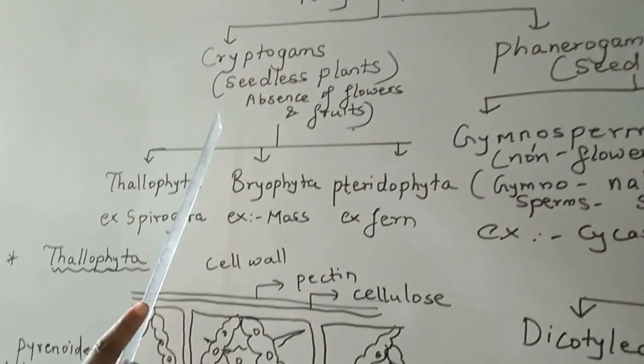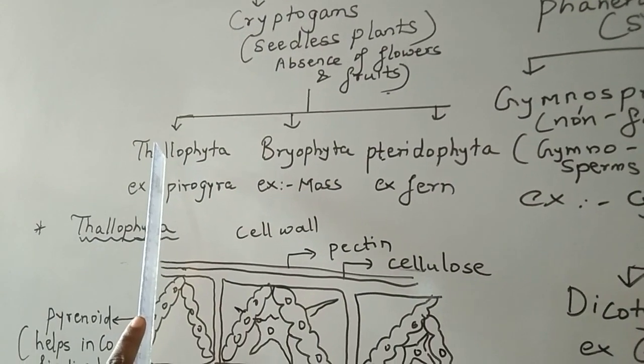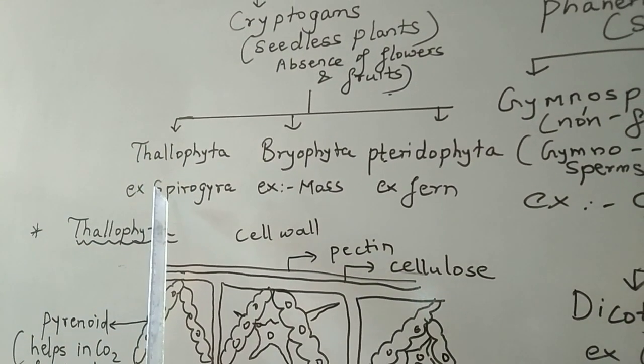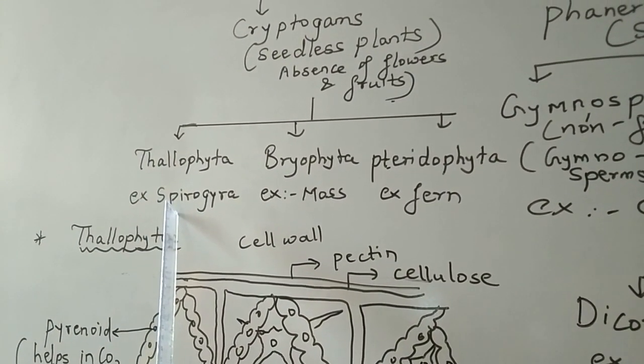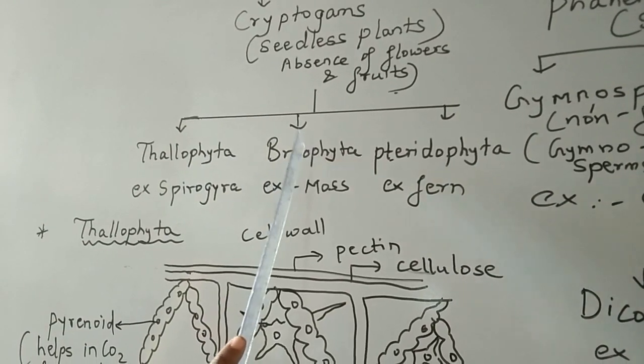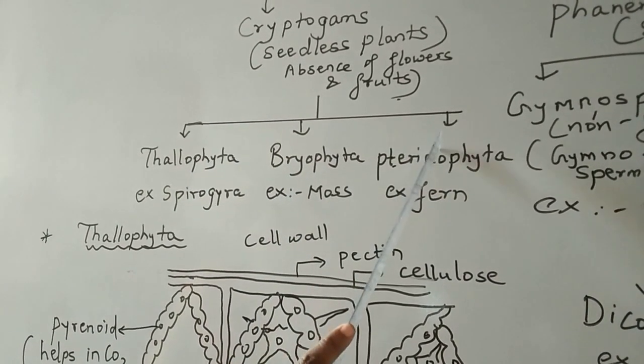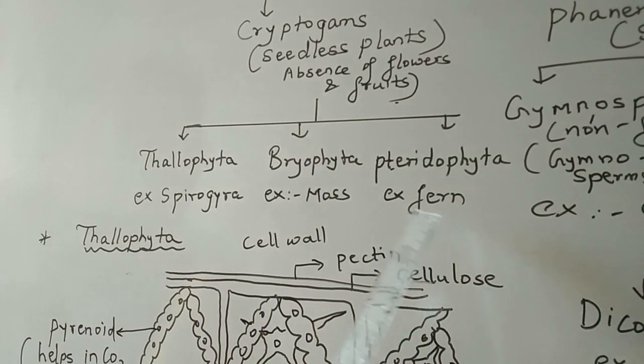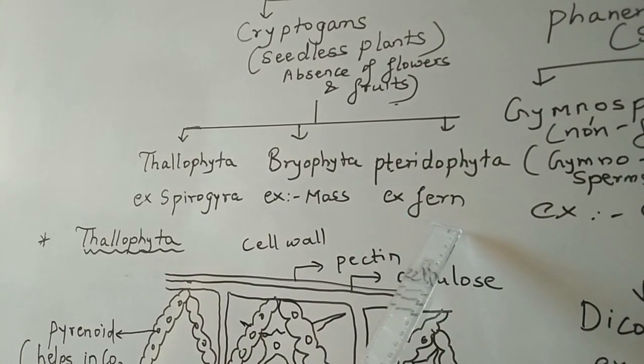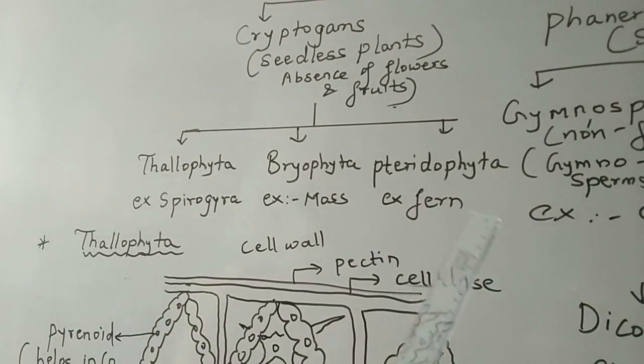Cryptogams are divided into three divisions. Thallophyta, for example Spirogyra. Bryophyta, in which example moss we are going to study. And the third division is pteridophyta, in which we are going to study the example of fern.